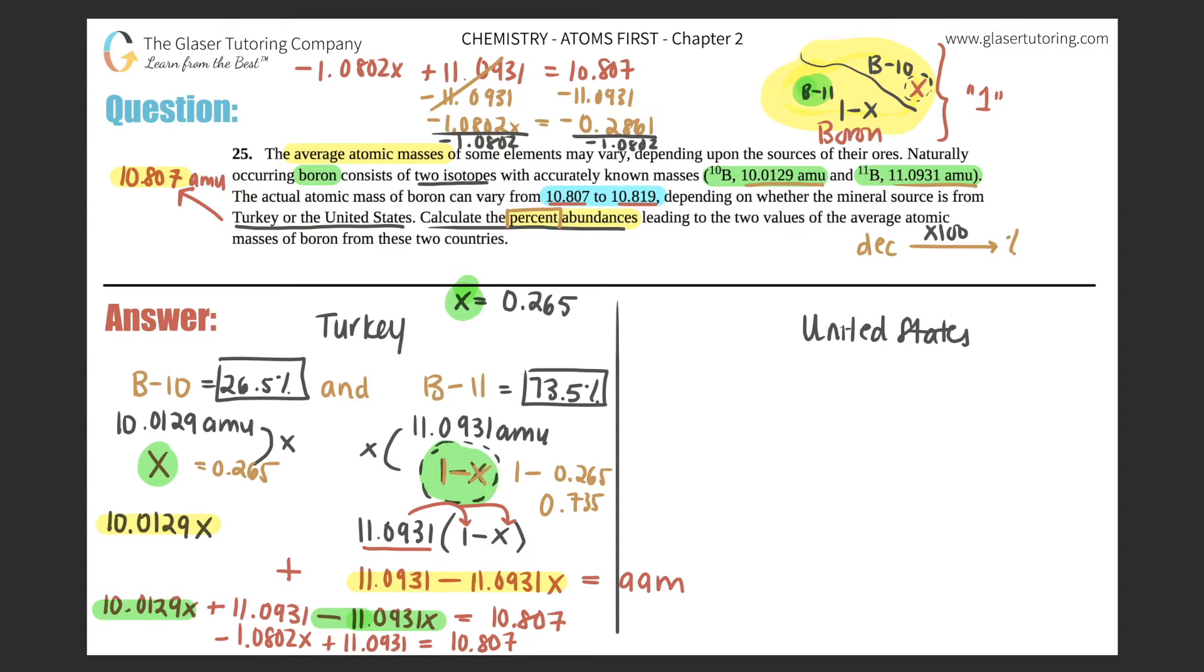Now let's do the same thing for the United States. Same type of idea. This one's going to be a little bit more quick. So we got boron-10, we got boron-11. The masses for the isotopes will remain exactly the same. So 10.0129 AMU. This one is still 11.0931 AMU. We don't know the percent abundances. So this would be labeled as X. This would be 1 minus X. Once again, it does not matter which one you label X and which one you label 1 minus X.